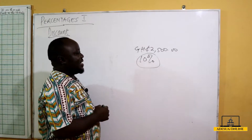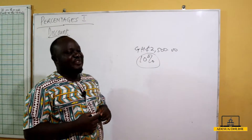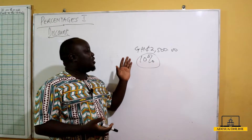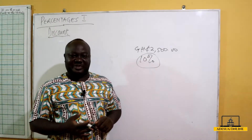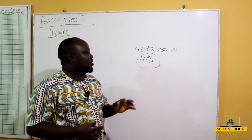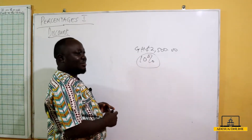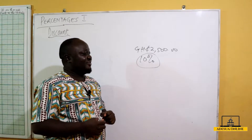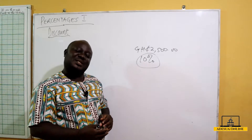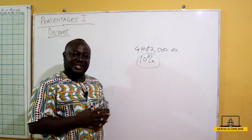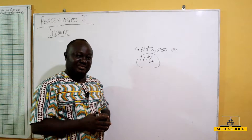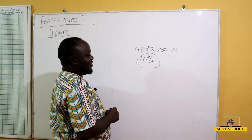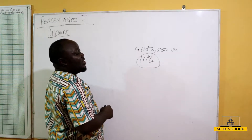So a 10% discount means that if I walk in and buy the TV, I'm not going to pay the full amount of 2500 Ghana cedis. We are going to calculate 10% of this amount and then take it out from 2500, and then I pay the resulting amount as the new price of the TV.